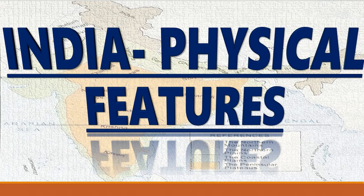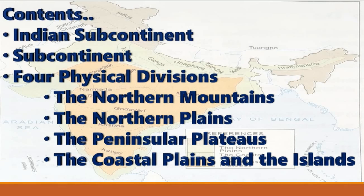Before starting the chapter, let us see the contents we are going to discuss today. The contents are: the Indian subcontinent, four physical divisions — the northern mountains, the northern plains, the peninsular plateaus, the coastal plains and the islands. Today we will be discussing the northern mountains only; the other three physical divisions will be discussed in the next video session.